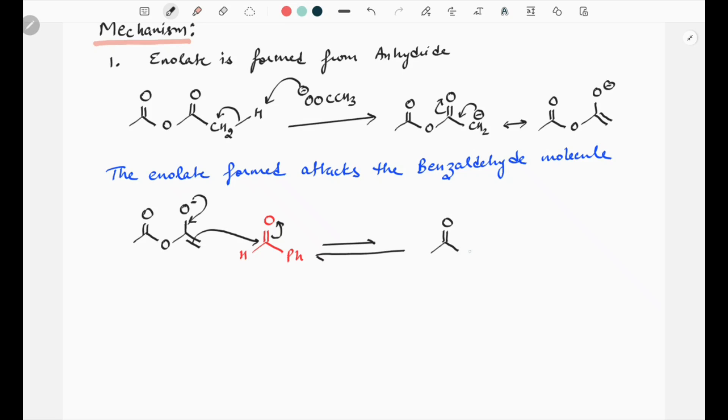What we get is C double bond O, oxygen, C double bond O. Now mark this as number one. This carbon attaches to this one, so what we get is O minus, phenyl. This is the molecule which is formed after the attack of enolate.